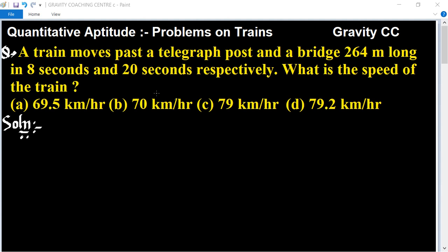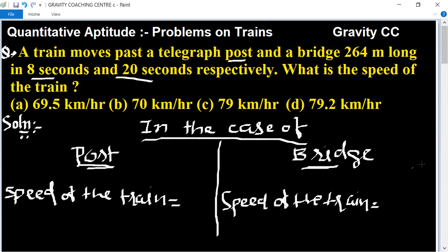In this question, a train passes a post and a bridge in 8 seconds and 20 seconds respectively. In the case of post and bridge,